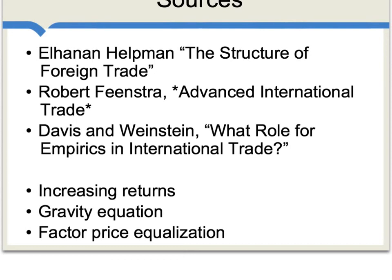For overviews, especially helpful sources include: a paper by Helpman online called 'The Structure of Foreign Trade,' which surveys these debates; the book by Robert Feenstra, 'Advanced International Trade,' and the undergraduate text by Feenstra and Taylor. There's also a paper by Davis and Weinstein called 'What Role for Empirics in International Trade?' For closely related issues, see also videos covering increasing returns and international trade, the gravity equation, and factor price equalization.